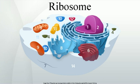The extra RNA in the larger ribosomes is in several long continuous insertions, such that they form loops out of the core structure without disrupting or changing it. All of the catalytic activity of the ribosome is carried out by the RNA; the proteins reside on the surface and seem to stabilize the structure. The differences between the bacterial and eukaryotic ribosomes are exploited by pharmaceutical chemists to create antibiotics that can destroy a bacterial infection without harming the cells of the infected person.